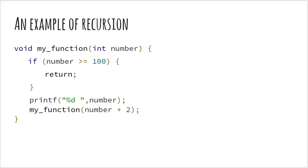Again, if the number is greater than hundred, then you will return in which case you have only printed the number that you first supplied. If it's not greater than hundred, then you print the current number and again add two and so on. So when would this program eventually return when the number crosses hundred?